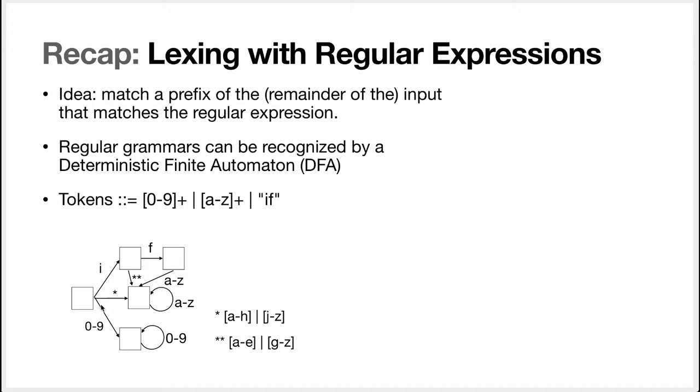Now if you see a letter, if the letter is I you will use this transition and then if you see letter F you'll end up in this state. If you end up here it means you match the token IF.